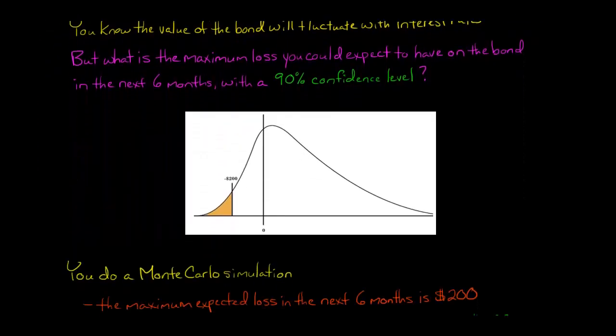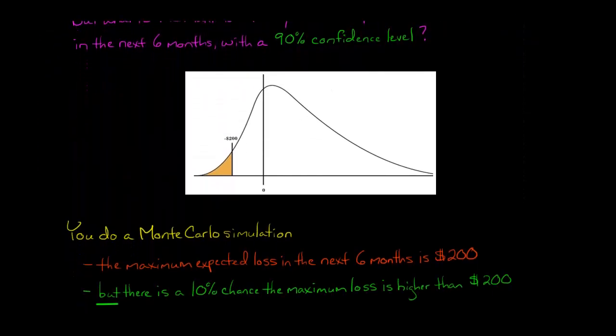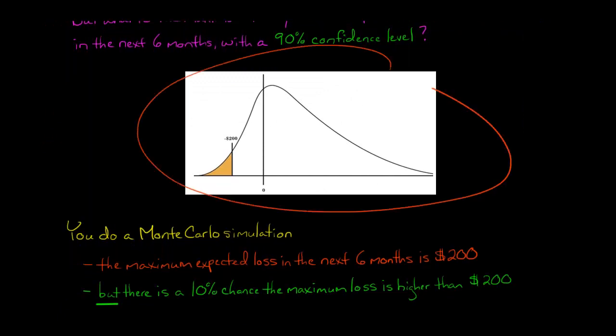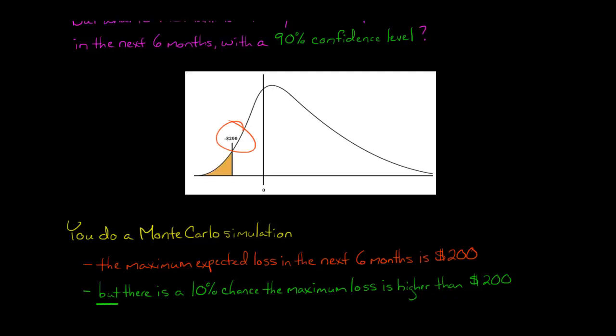What we could do is a Monte Carlo simulation and we end up with a distribution that looks like this. At a 90% confidence level, we can say that the maximum loss on that bond in the next six months is going to be $200. That's the maximum that we can expect in the next six months, $200 loss on that bond.